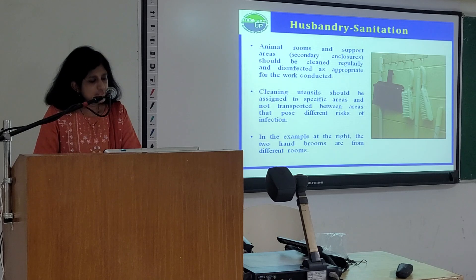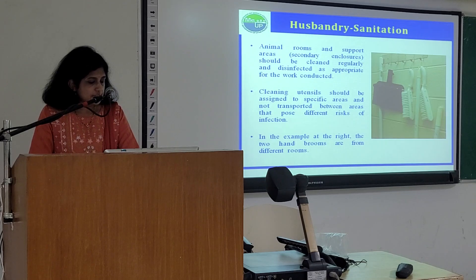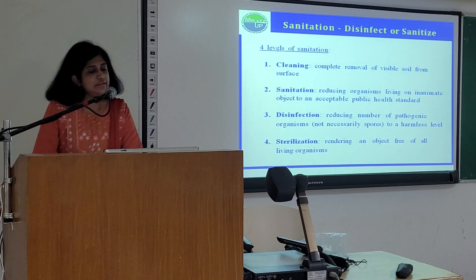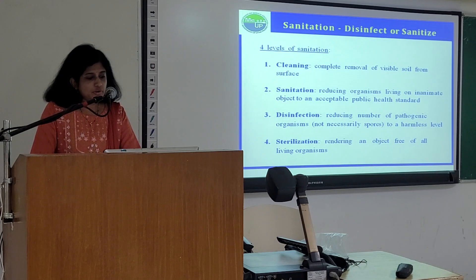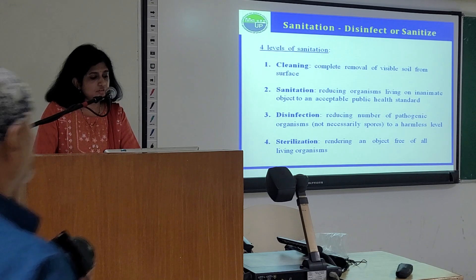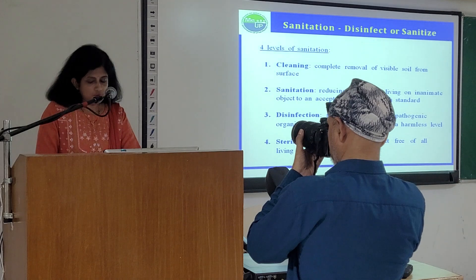Animal rooms and support areas — secondary enclosures — should be cleaned regularly and disinfected as appropriate for the work conducted. Cleaning utensils should be assigned to specific areas and not transported between areas that pose different risks of infection. There are four levels of sanitation: cleaning, sanitation, disinfection, and sterilization. Cleaning means complete removal of visible soil from the surface. Sanitation is reducing organisms on inanimate objects to an acceptable public health standard. Disinfection is reducing the number of pathogenic organisms, not necessarily to a harmless level. Sterilization is rendering an object free of all living organisms.